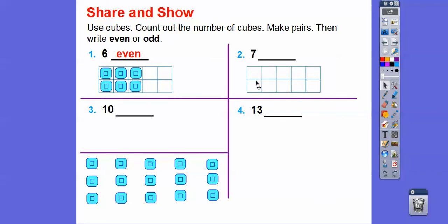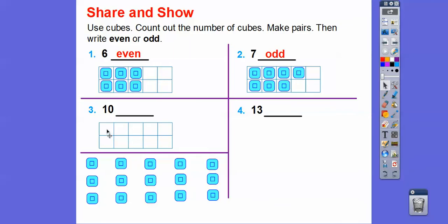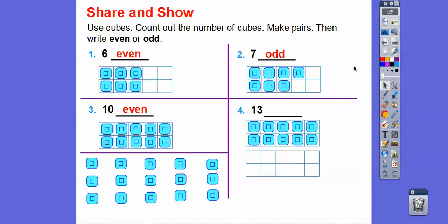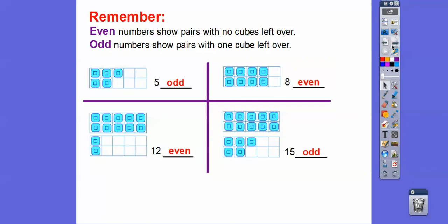Now I'll do 1, 2, 3, 4, 5, 6, 7. Is it even or odd? This one's going to be odd because there's a cube left over — so that's 7. This one's 10, all filled up. Do you guys know how to count by twos? There's no cube left over, so this one's even. 13 is going to be the 10 plus 3 more: 1, 2, 3 — so this one's going to be an odd number. Remember, even numbers show pairs with no cubes left over, so 8 is even. 12 is even. And odd numbers show when there's one cube left over, so 5 is odd, and so is 15.